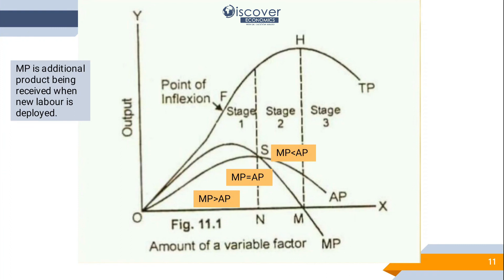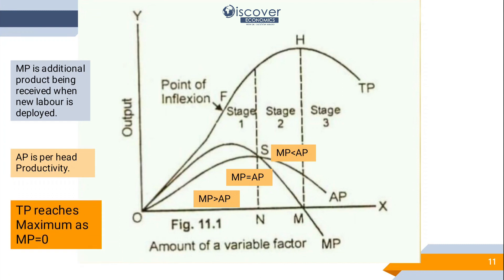Marginal productivity is the additional product received when a new worker is deployed. Average product is per-head productivity — total product divided by quantity. Total productivity reaches its maximum when marginal productivity equals zero. The ideal point is to deploy workers up to where total productivity peaks and marginal productivity is zero, because an additional worker beyond that point brings nothing to the business, and deploying even more will make productivity go negative.